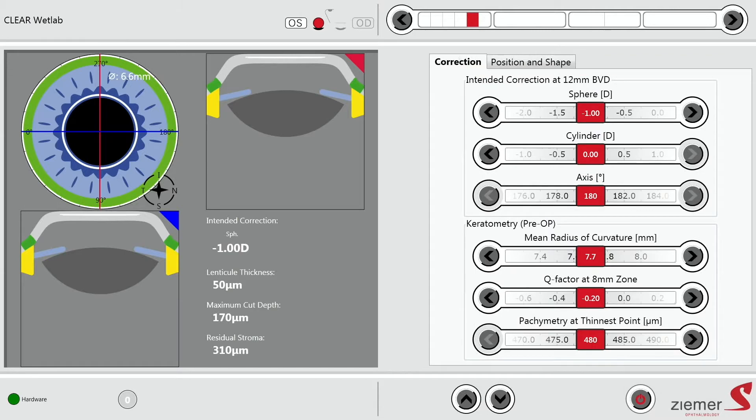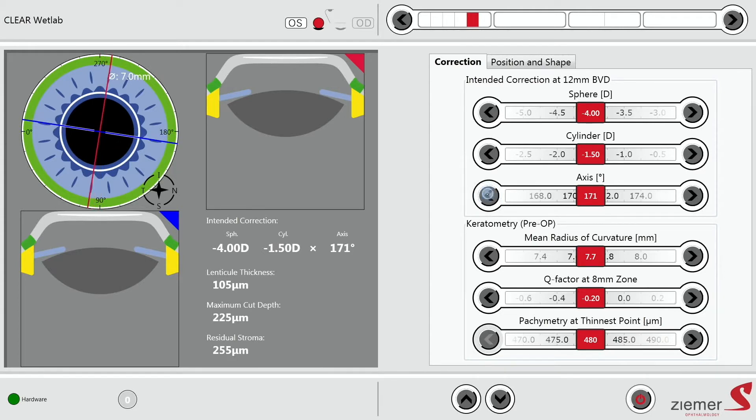I will now select the correction I want to apply on this eye. I will do a minus four diopter for the sphere correction and minus 1.5, for instance, as a cylinder correction. And then the axis also has to be changed to the one I need, which is here, for instance, 160 degrees.